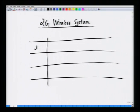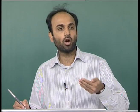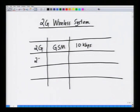The first 2G wireless standard is GSM, or the Global System for Mobile Communications — the most popular 2G wireless standard currently in use. It has a basic digital voice data rate of approximately 10 kilobits per second. There is also a competing second generation wireless standard called CDMA, which stands for Code Division Multiple Access, and that also has a voice data rate of 10 kilobits per second.